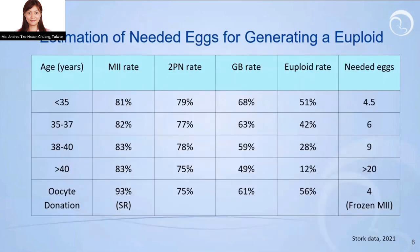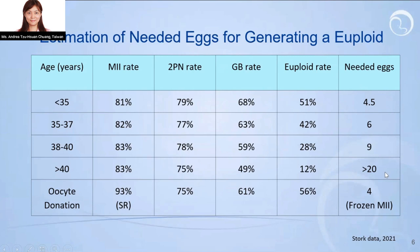This is a calculation table derived from our big data at Storpe Center. With increased maternal age, the maturation rate and fertilization rates don't change much — around 80% and 78-79%, respectively. However, the blastocyst formation rate and the euploid rates dramatically decrease. If you multiply these rates together, you can obtain the number of eggs needed to generate a euploid embryo. If that number is very large, exceeding what the patient can realistically produce, you can recommend the oocyte donation program rather than using her own eggs. This is very useful in clinical consultation.